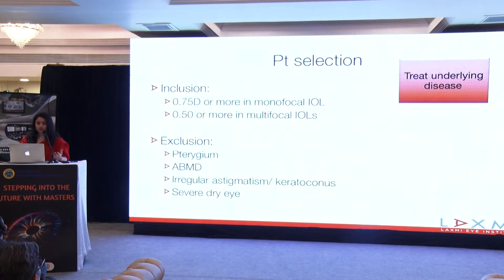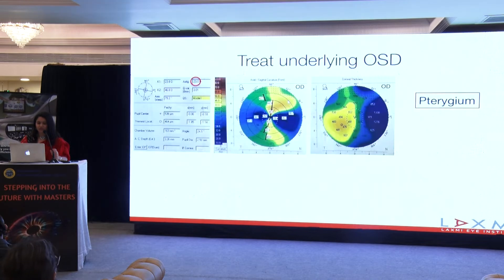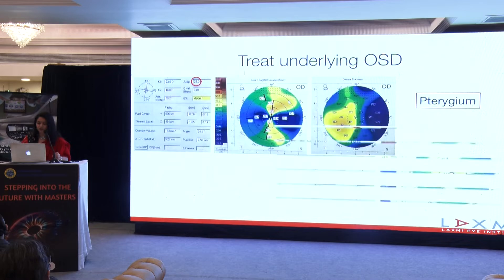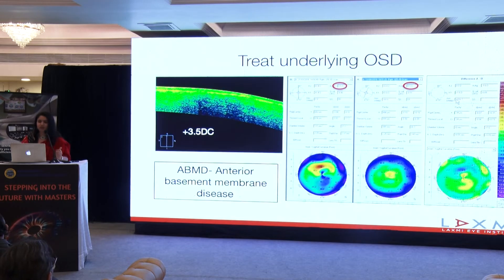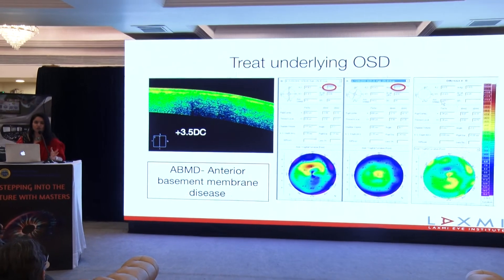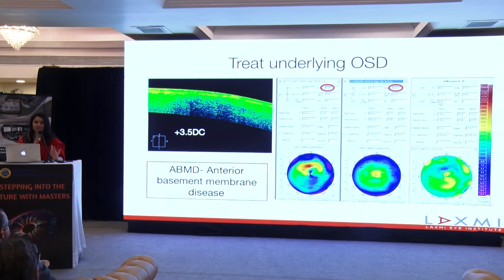Once we know the threshold that we need to correct, we should also know the ones to exclude or to treat. A pterygium can induce a cylinder of up to 2-3 diopters which cannot be corrected by any toric lens, but a simple excision will just give us a better cylinder to work with. Or a case of anterior basement membrane disease, where the problem is an abnormal basement membrane giving irregular astigmatism which you cannot correct with a toric lens — but a simple PTK will change that, leaving us with a surface so regular you may not need a toric lens.